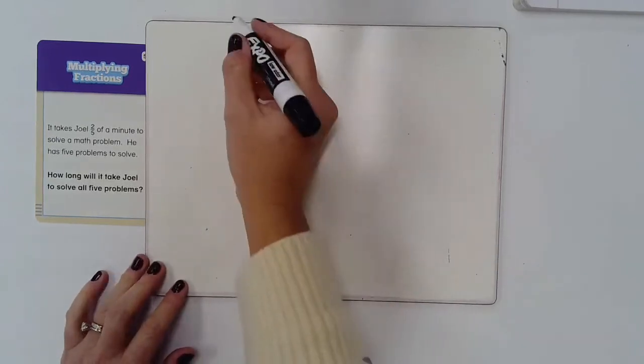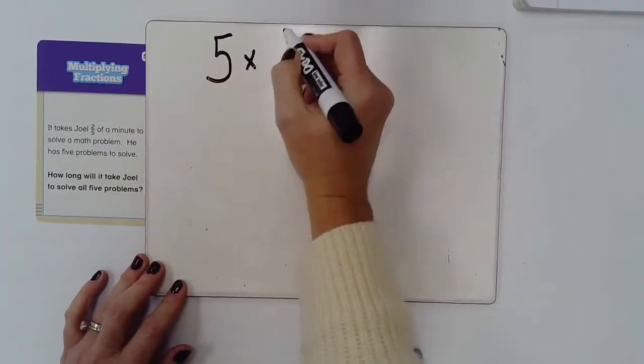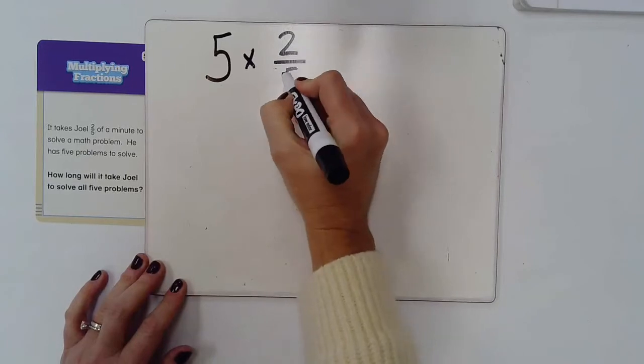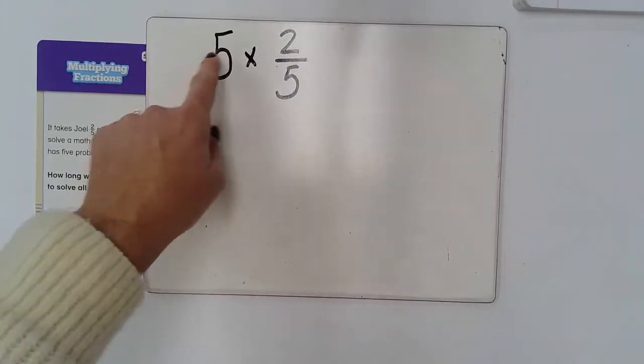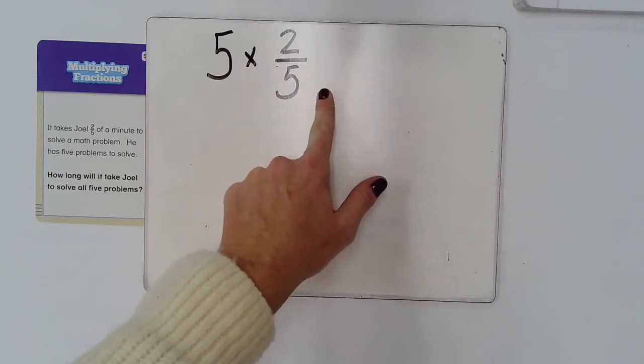I know he has five problems and each problem takes him two-fifths of a minute to solve. So I'm going to say five times two-fifths. I could use repeated addition here, but this time I'm going to kind of draw it out so you can see what this might look like.